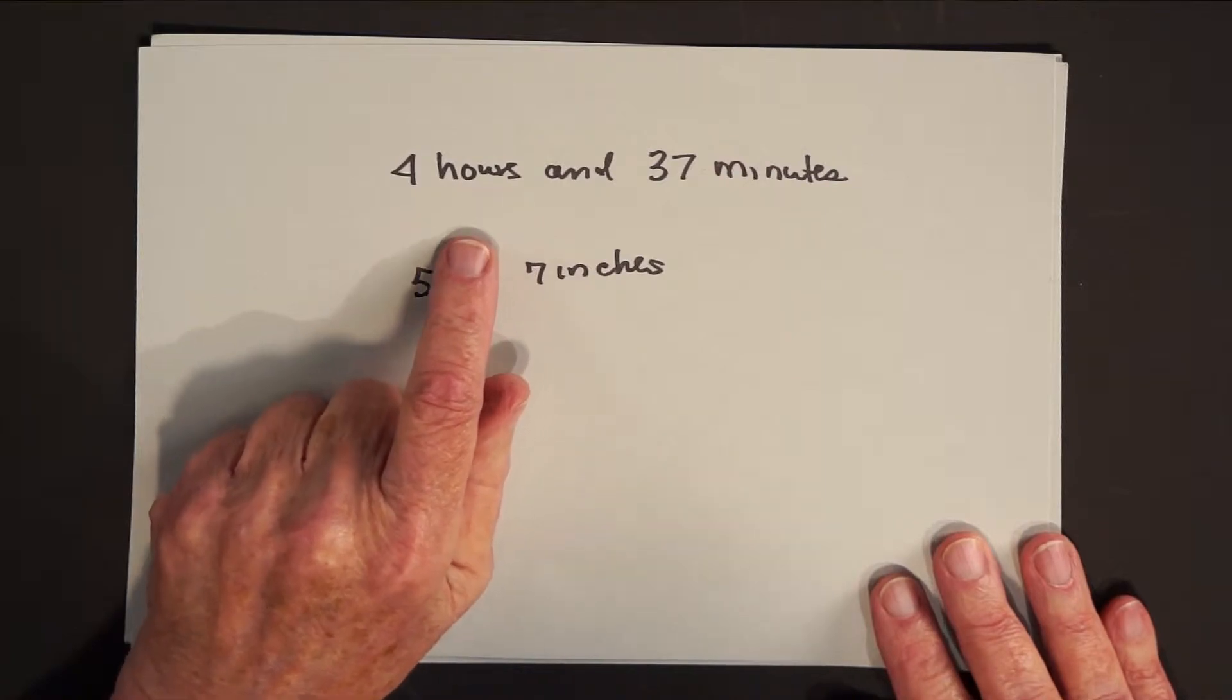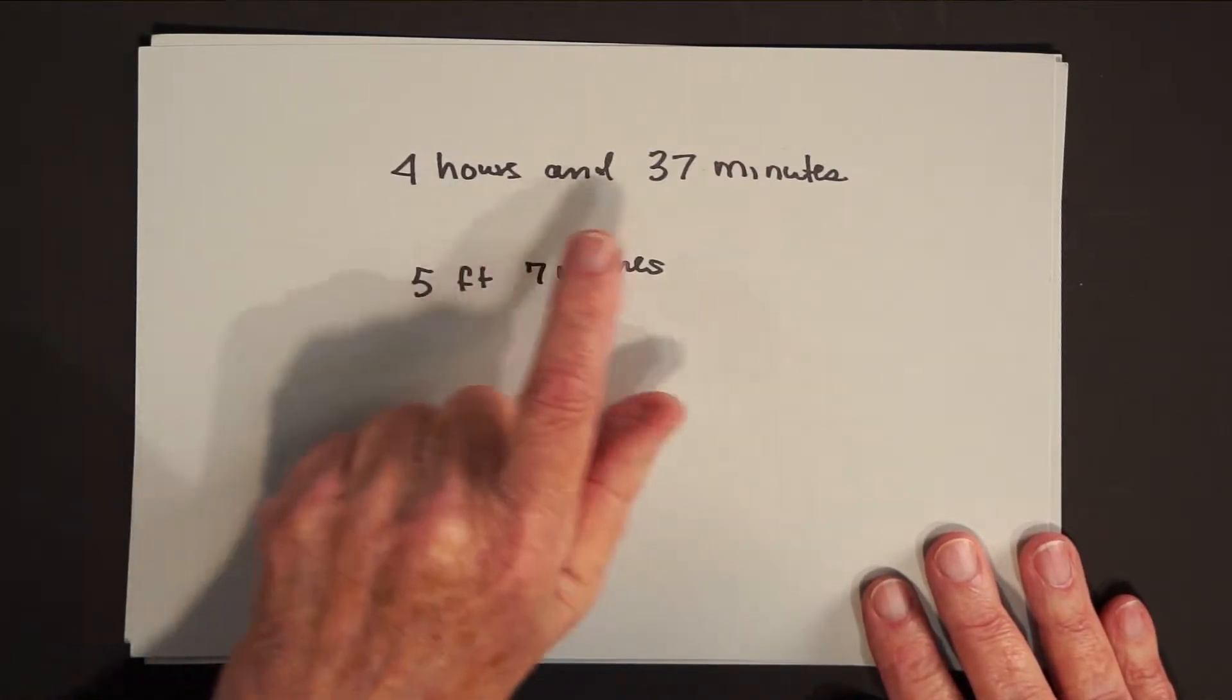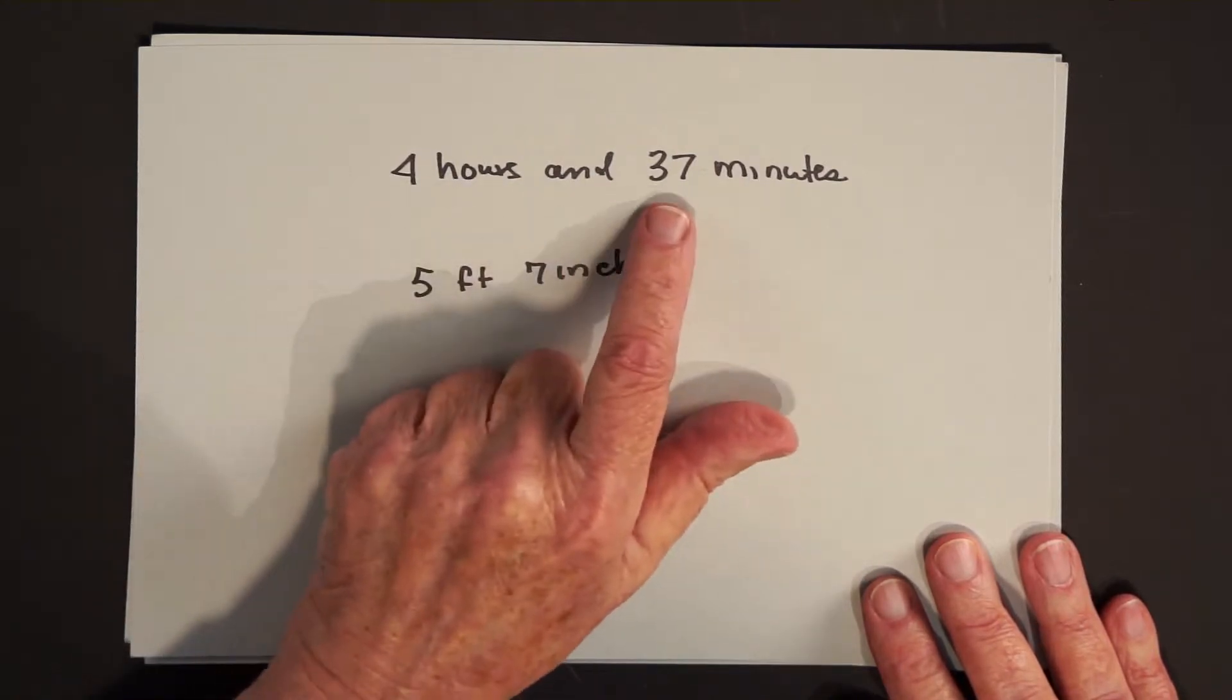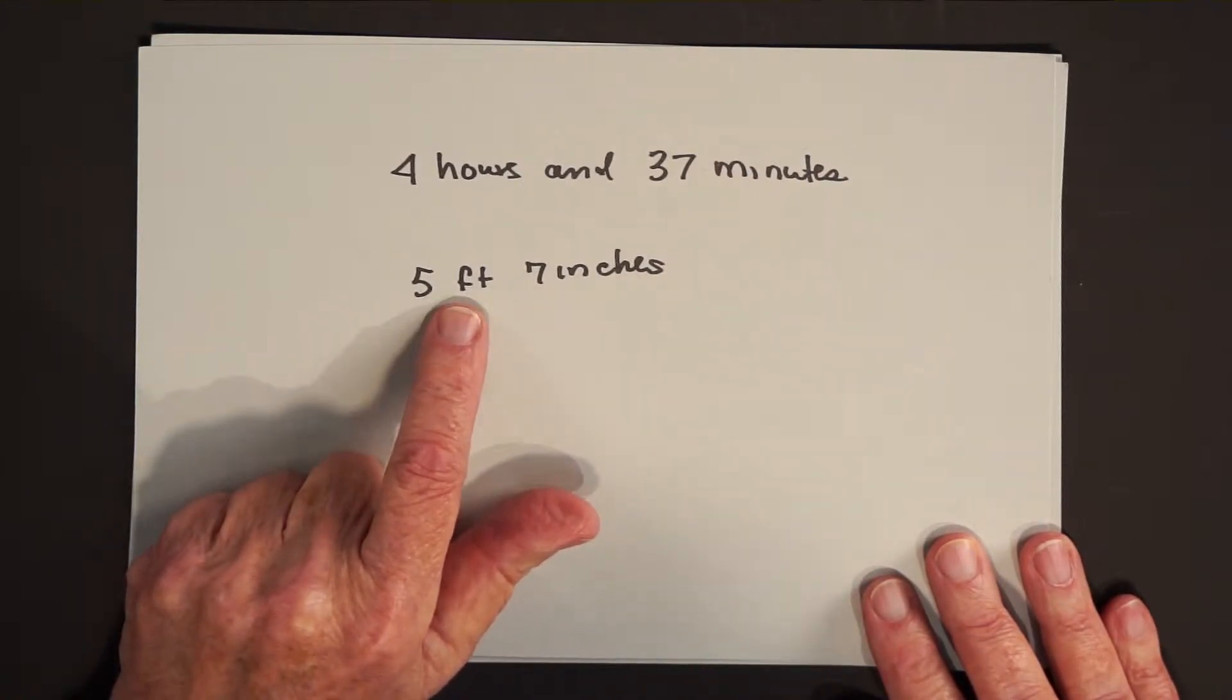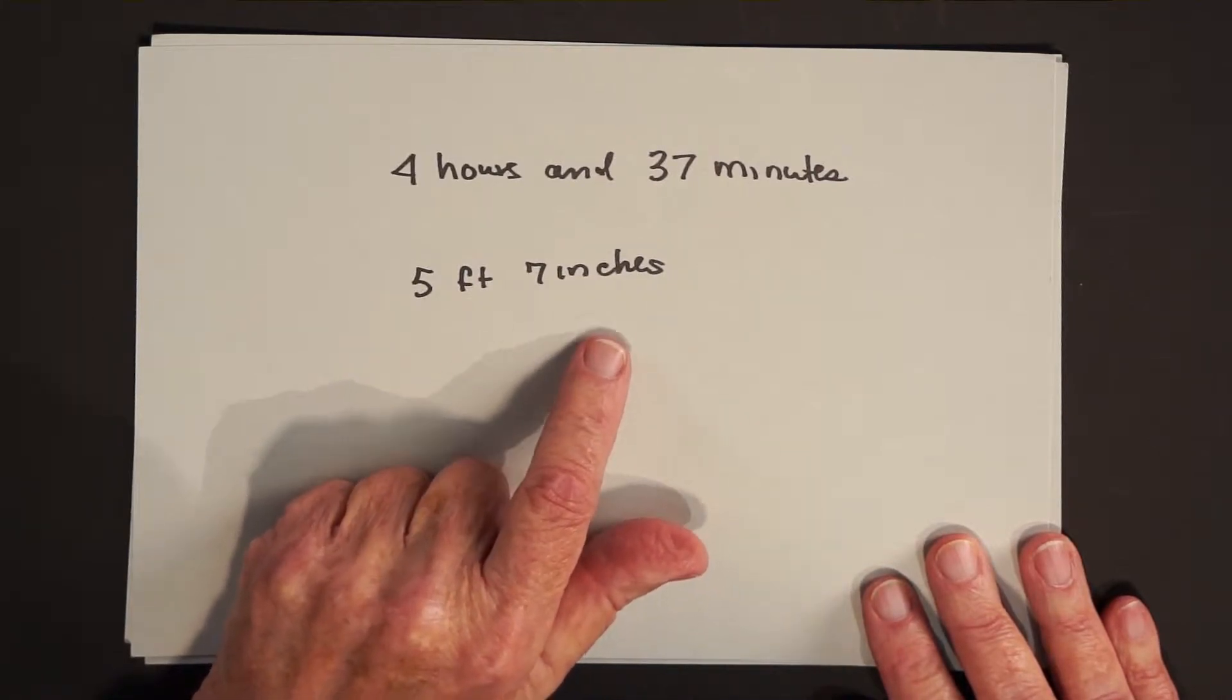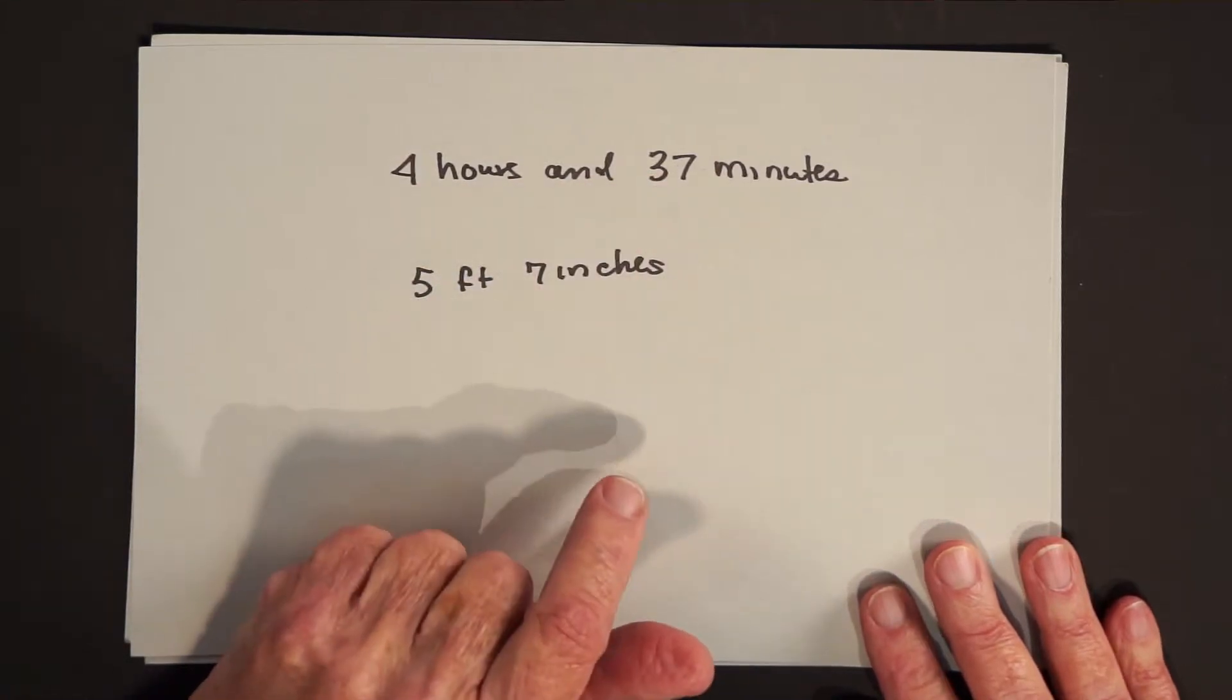And do you see why this is called mixed numbers? The two numbers we see here are 4 and 37, but the 4 is modifying hours and the 37 is modifying minutes. Same here. The 5 is modifying feet and the 7 is modifying inches. So what we really have are mixed units.